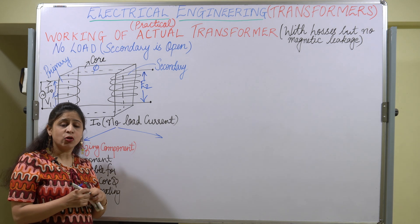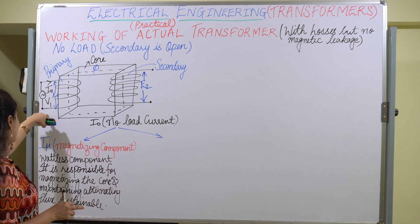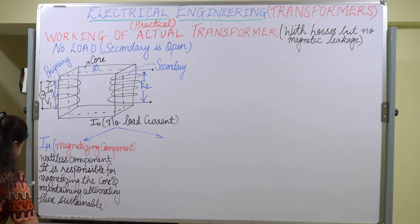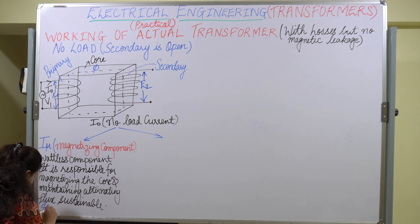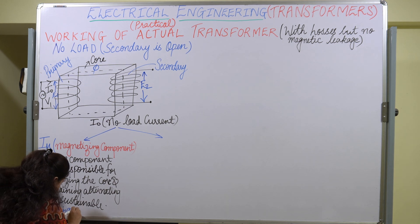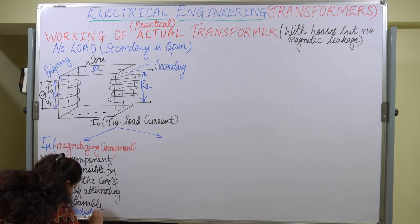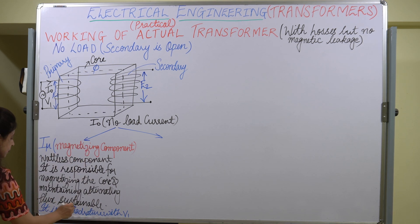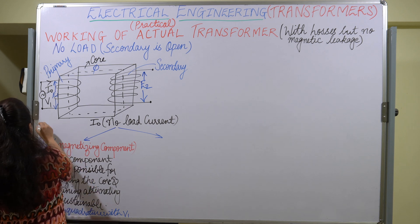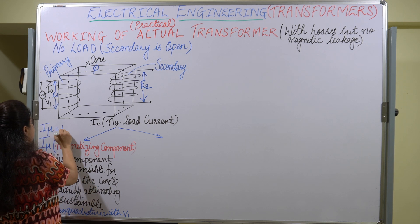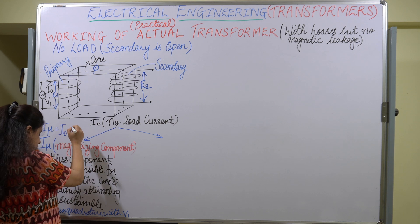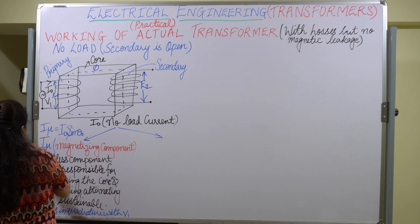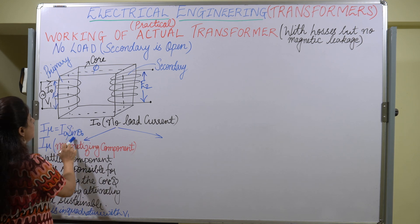This magnetizing component is in quadrature with the voltage source V1 — that is an important point. It is in quadrature with V1. I_mu is given by I₀ sin θ₀.